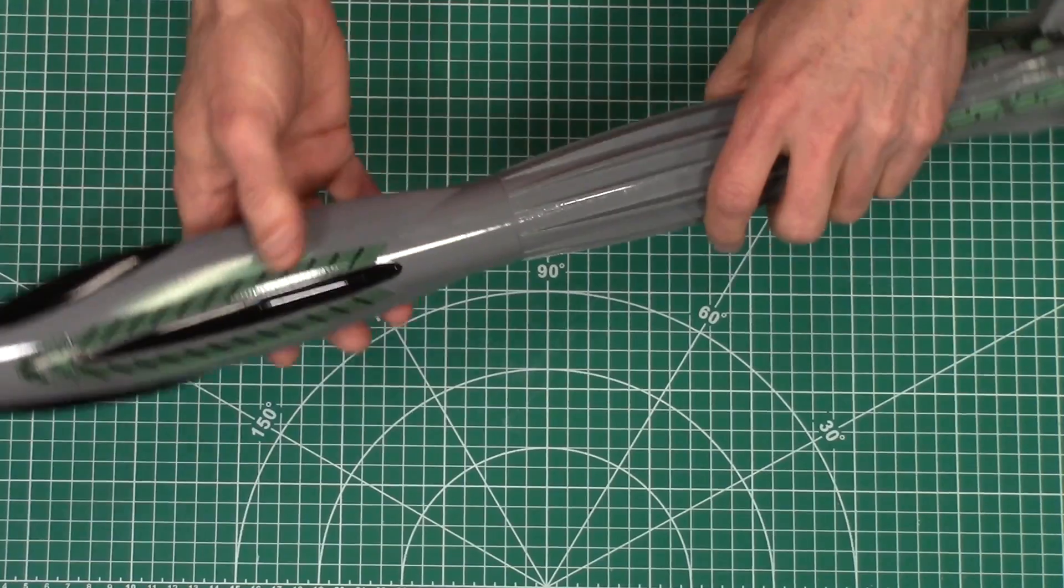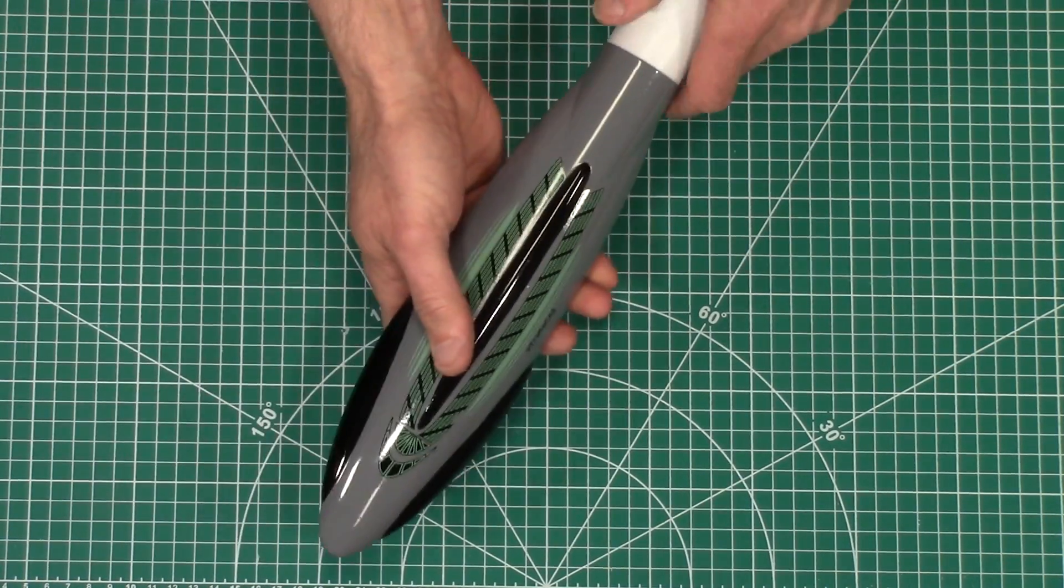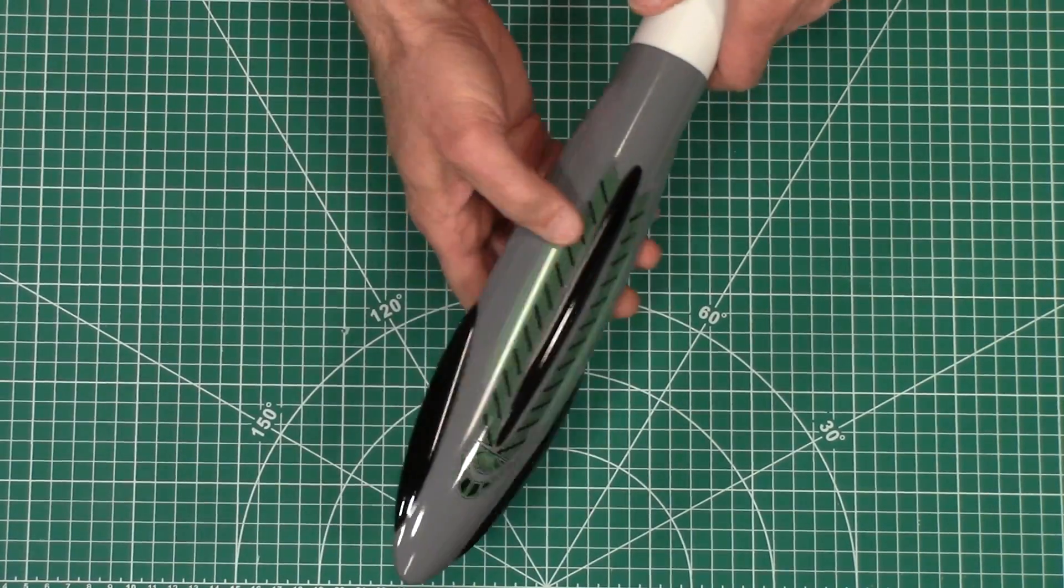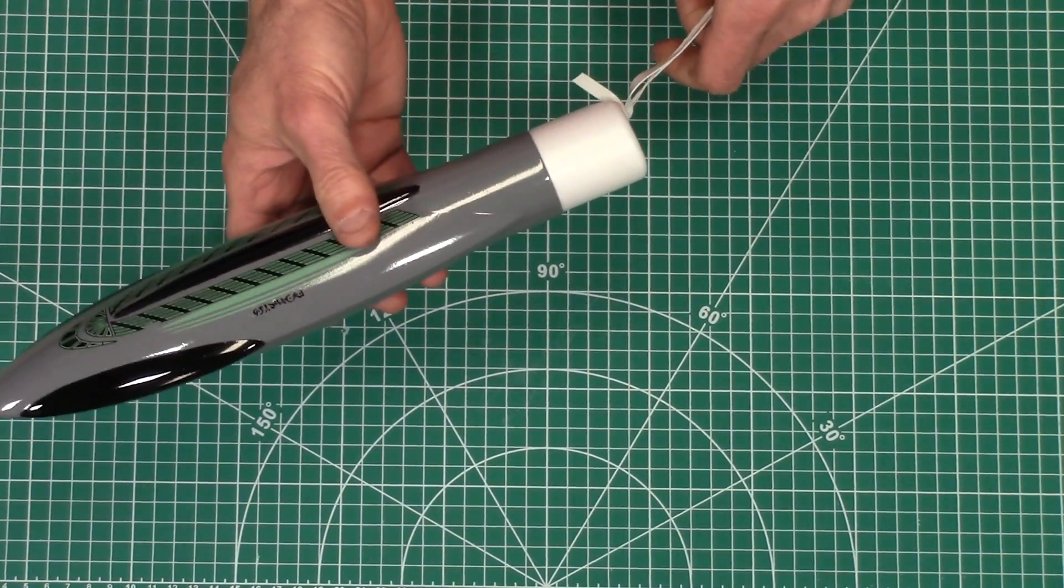But what really makes it unique is this blow molded nose cone. You can see it has this weird shape to it that's really unique in rocketry.